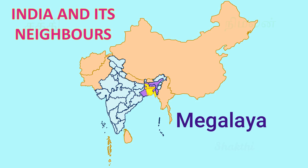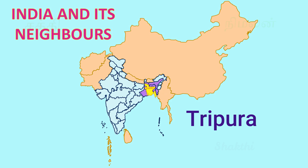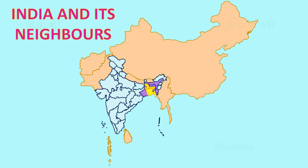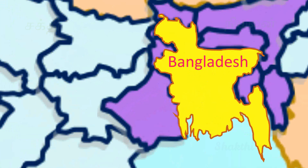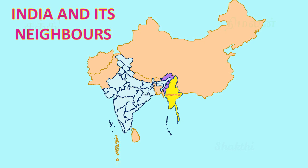The Indian states West Bengal, Meghalaya, Assam, Tripura, and Mizoram share some boundaries with Bangladesh.